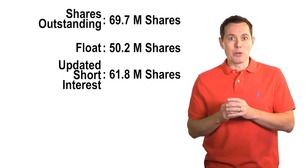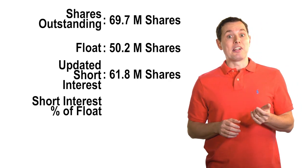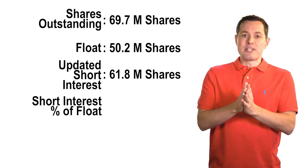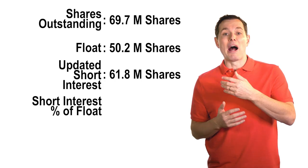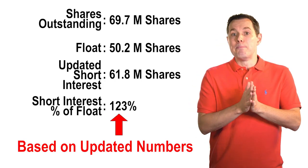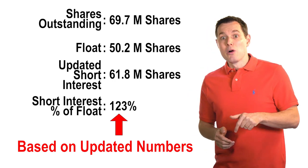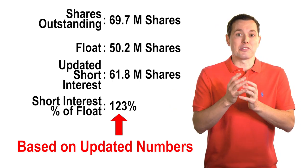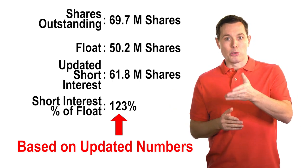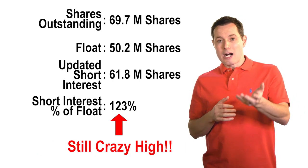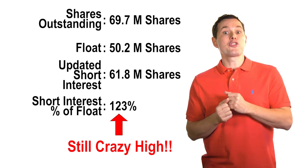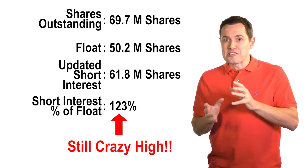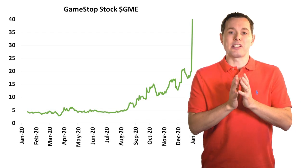Another key term to be aware of is short interest as a percentage of float. All this number is: we take the short interest of the company and divide it by the float. In our case, that would be about 140% — since right now there's a larger short interest than there is float. About 142% of the float is currently being sold short, which is crazy. Nearly all companies have some percentage of their float being held short, but very rarely does the short interest get larger than the float. That is somewhat unique.